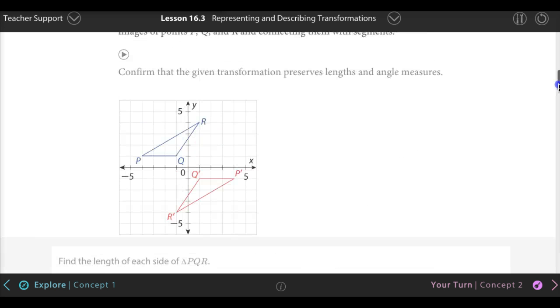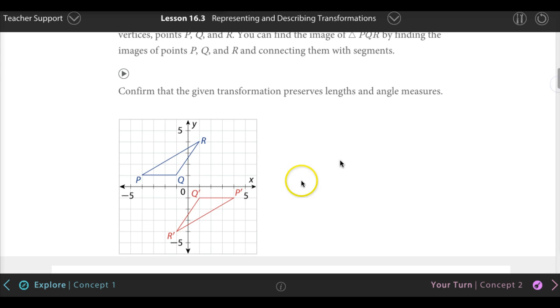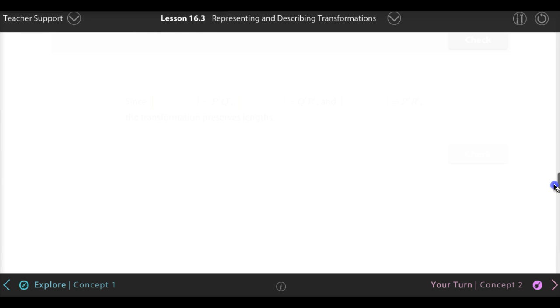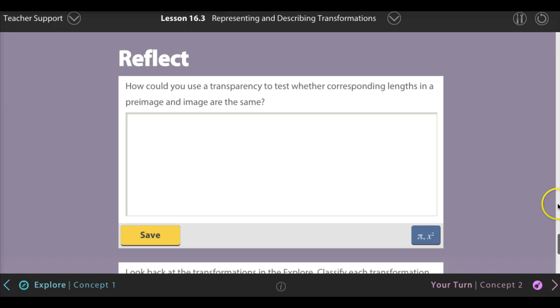We will solve all these problems. What you have to do is use the distance formula or the Pythagorean theorem to figure out how long this is and make sure it measures the same. Measure all three sides and make sure they measure the same. Then we're going to use a protractor to measure the angles and show how they measure the same. Therefore, this is a rigid transformation. We're going to do that in class.